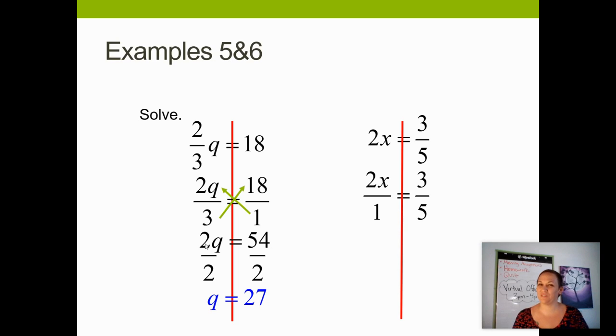Now, very similar to the previous problem, I can cross-multiply. The 5 will multiply with the 2x, giving me a 10x. I'm going to carry down my equal sign, and then I'll multiply the 1 times the 3.